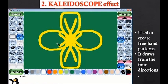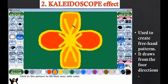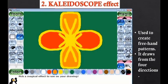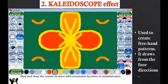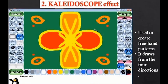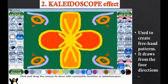This is the drawing we have made from kaleidoscope effect. You can see I'm drawing on a single point, but Tux Paint is automatically drawing this in all four directions, just like this. That's how kaleidoscope effect works.